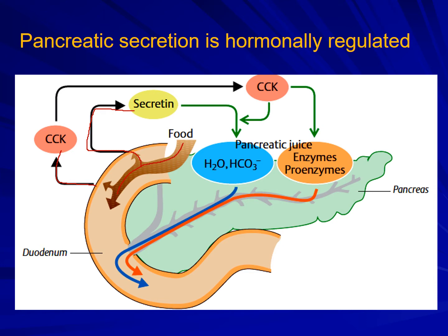The function of this secretin-induced pancreatic juice is, number one, to neutralize the HCl that has entered along with the chyme from the stomach into the intestinal lumen, thus protecting the intestinal mucosa from being damaged by acid. Number two, it provides the required alkaline pH between 7 and 9 for the activation of pancreatic enzymes, since pancreatic enzymes work optimally not in an acidic environment but only in a highly alkaline environment. Therefore, the duodenal environment must be converted from acidic to alkaline.